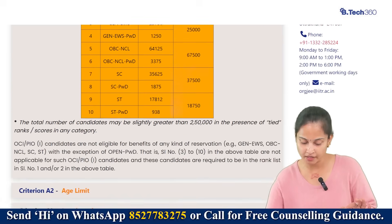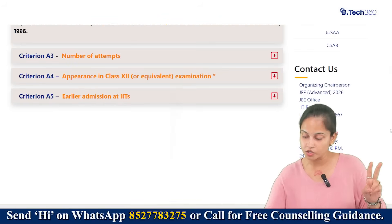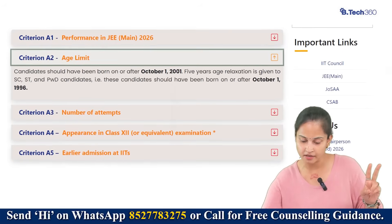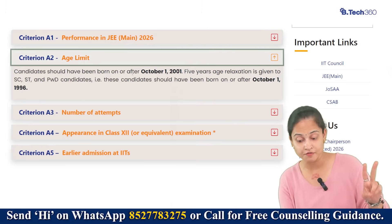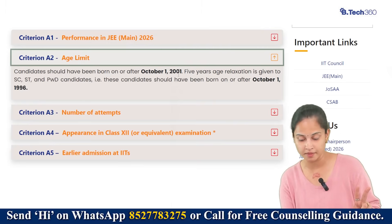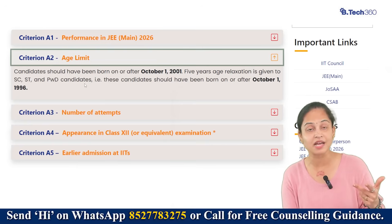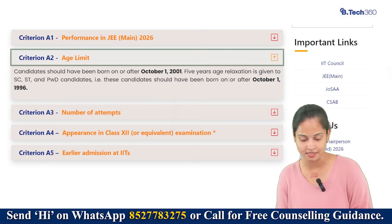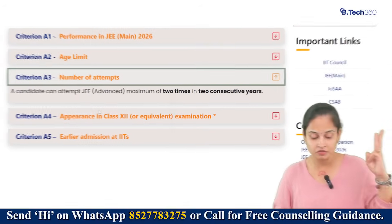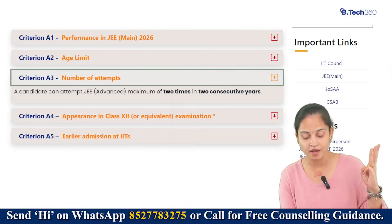Criteria number two is the age limit. Candidates should have been born on or after October 1, 2001. Five years age relaxation will be given to SC, ST, and PwD candidates — meaning these candidates should have been born on or after October 1, 1996.